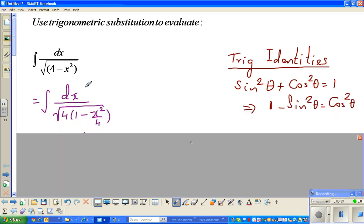The first step is I factored out 4. If you factor out 4 and expand it, you can see 4 times 1 is 4 and 4 times minus x squared over 4 is minus x squared. So this and this are the same.